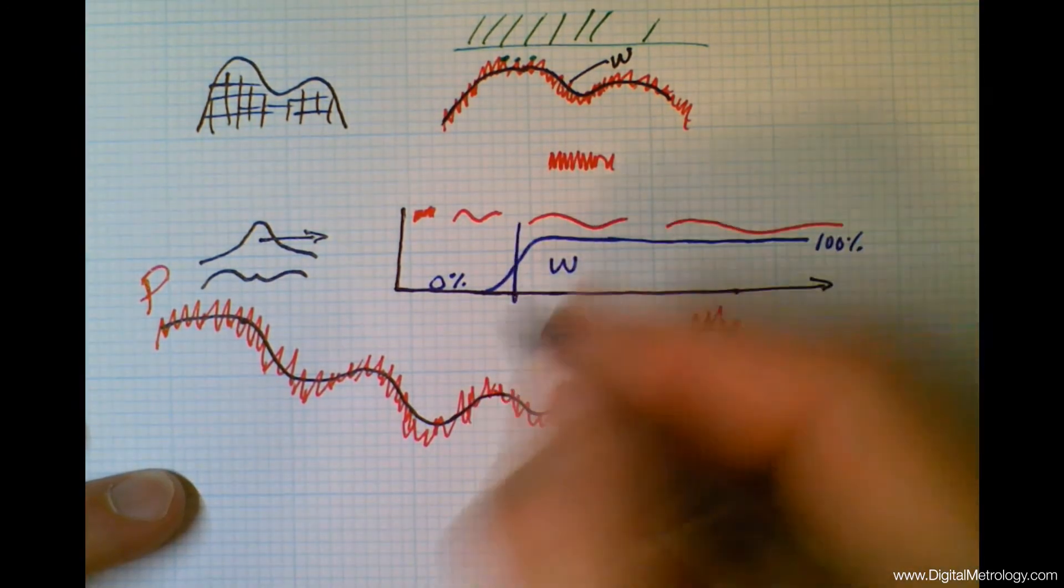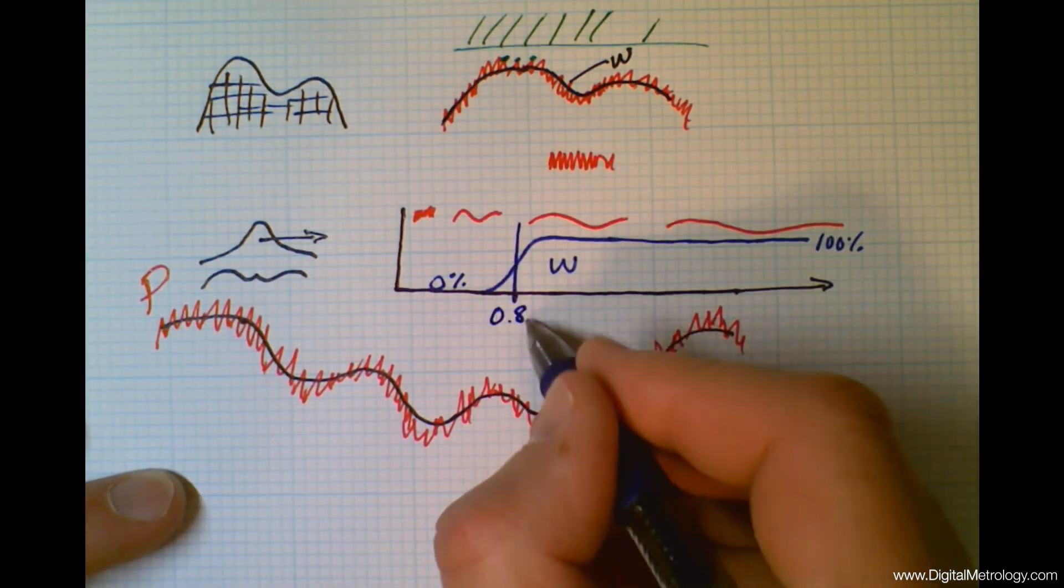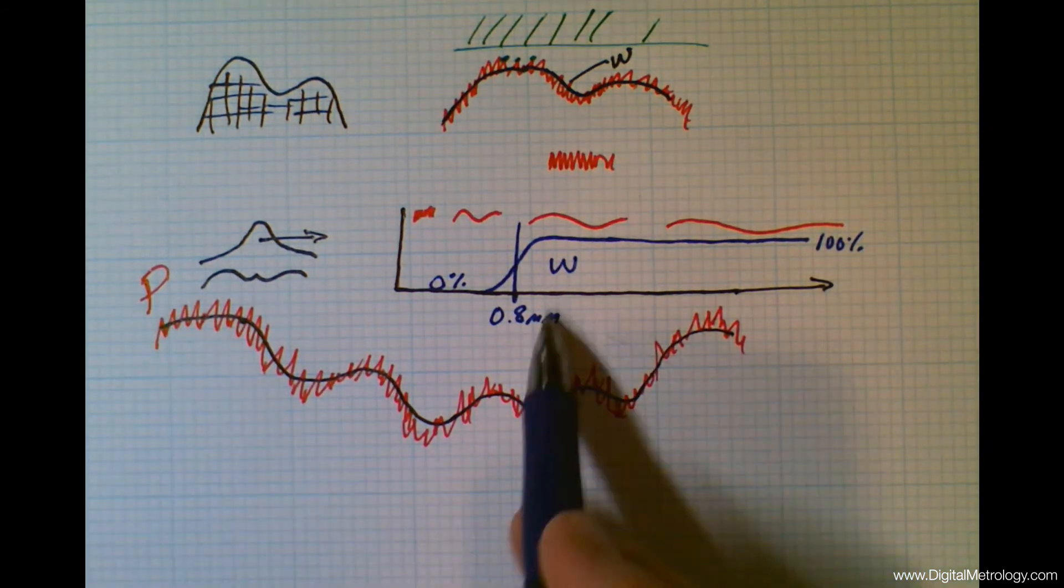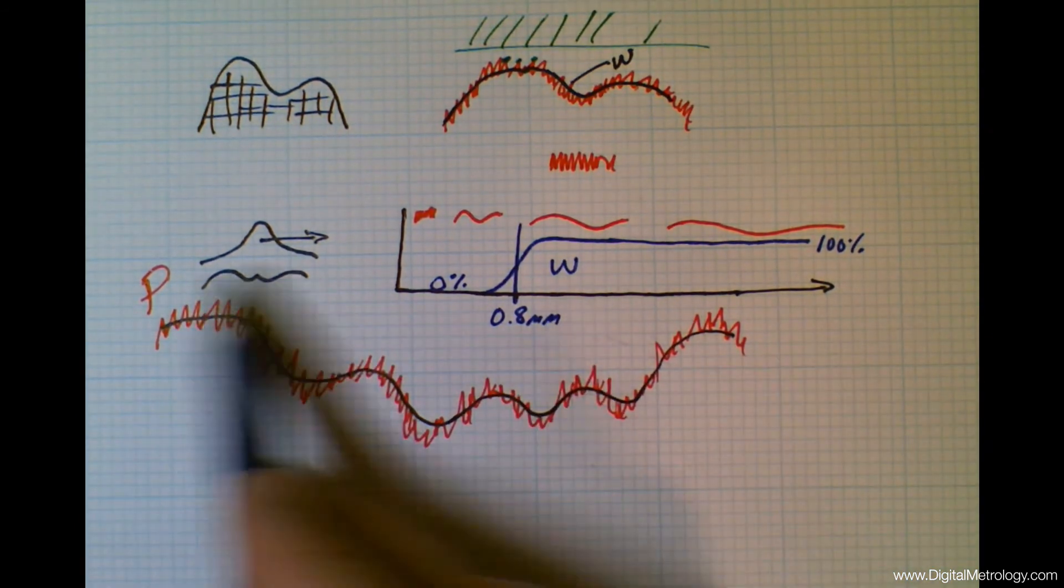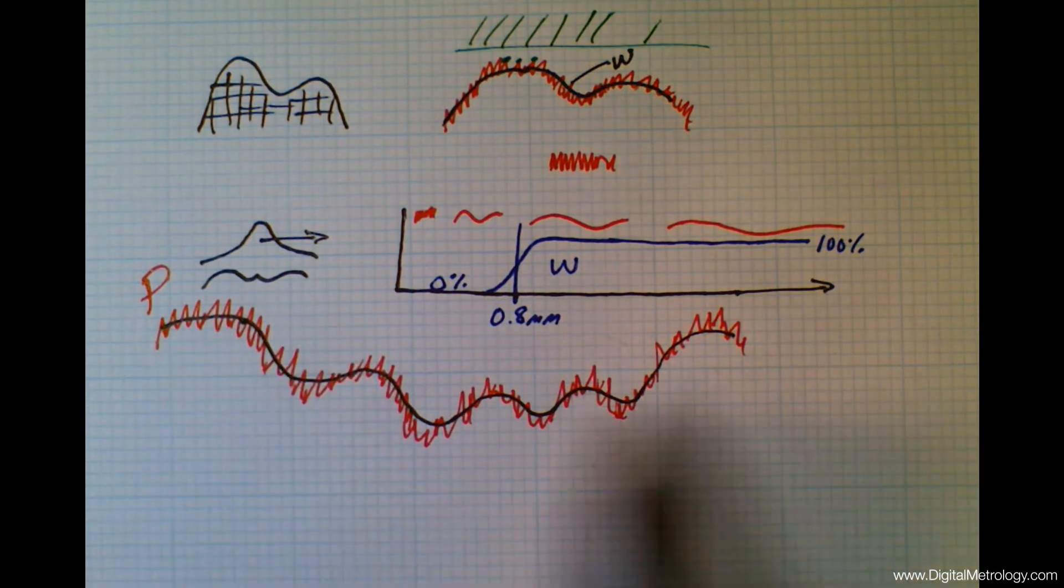And perhaps this is for a zero point eight millimeter filter cutoff. So at zero point eight millimeters, we're using a moving average this wide to smooth through the data.